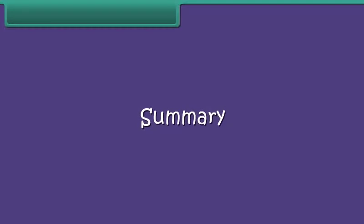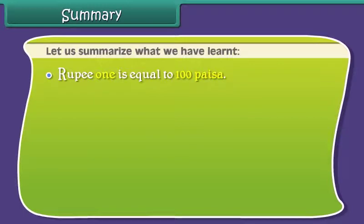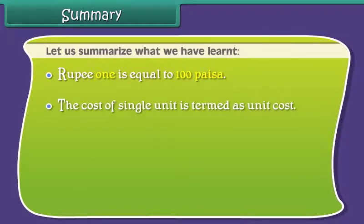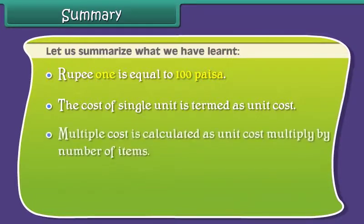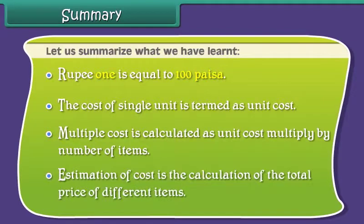Summary. Let us summarize what we have learned. Rupee 1 is equal to 100 paisa. The cost of a single unit is termed as unit cost. Multiple cost is calculated as unit cost multiplied by number of items. Estimation of cost is the calculation of the total price of different items.